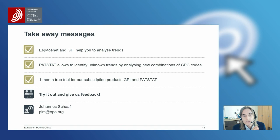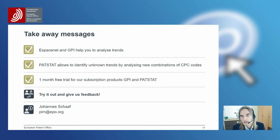To sum up: Espacenet and GPI help you analyze trends that you are already aware of — you can look into main applicants, filing countries, protected markets, and so on. PATSTAT allows you to identify unknown trends by analyzing new combinations of CPC codes. There is a one-month free trial for our subscription products GPI and PATSTAT available. Thank you very much for your attention — try it out and give us your feedback.